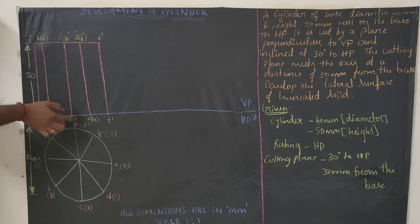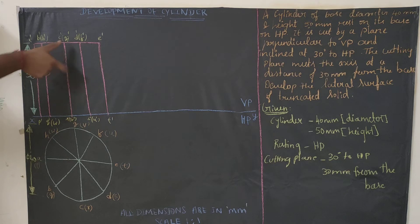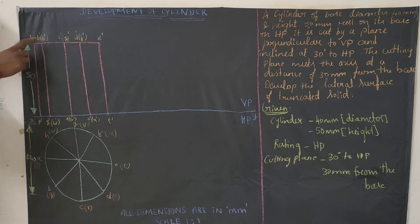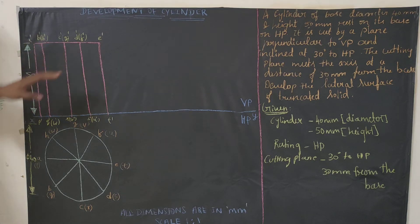From here, draw a line for 50 mm and complete this box. The height of this box will be 50 mm. Then complete all the box lines and extend them. Now for naming the top points.